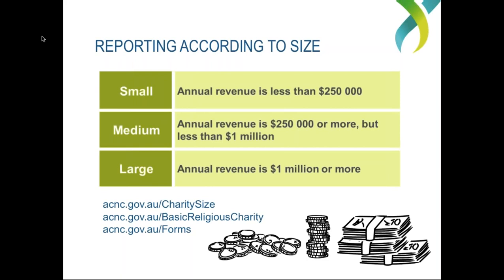Requirements within the form are according to charity size. The URL acnc.gov.au/charitysize explains this in more detail. acnc.gov.au/basicreligiouscharity covers requirements for that particular type of charity. And acnc.gov.au/forms contains forms you may need if you want to apply to have your charity size altered for a particular year or your reporting period changed.